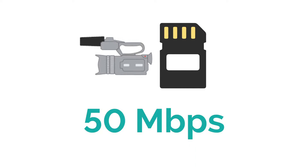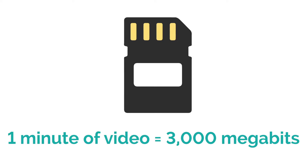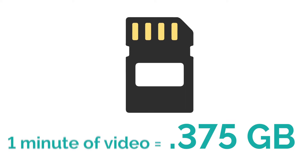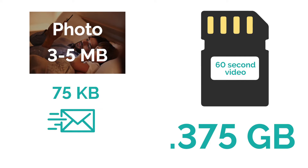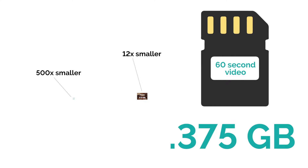Side note: this can help explain why video files are so big. Say for example you're shooting at 50 megabits per second. That means every second you're recording 50 megabits worth of data, which over the course of a minute equals 3,000 megabits — that's about 0.375 gigabytes. To put this to scale, a high quality photo is about 3–5 megabytes, and an average email is around 75 kilobytes, making that 60 seconds of video 12 times the size of a high quality photo and 500 times the size of an email.